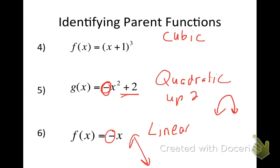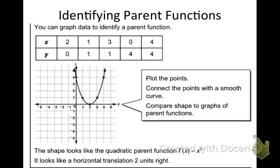Next, you can also identify parent functions based on their points. For example, I'm going to plot the coordinates (2,0), (1,1), (3,1), (0,4), (4,4), connect the dots, and I have a quadratic graph — a parabola. This quadratic is shifted two units to the right from the parent function because instead of starting at (0,0), it's shifted two units over.